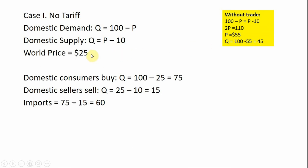Given that the world price is less than the domestic price, the comparative advantage lies in the rest of the world. So domestic consumers with free trade can buy the product at $25, and they will buy 75 units — plugging $25 into the domestic demand equation. Domestic sellers can sell at best for $25, and will bring 15 units to the market. The difference between 75 and 15 is made up by imports.